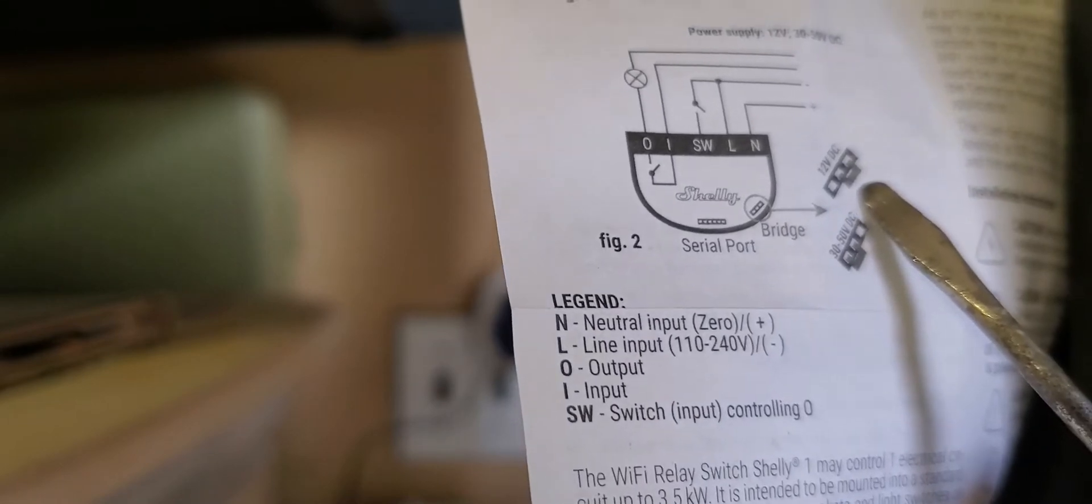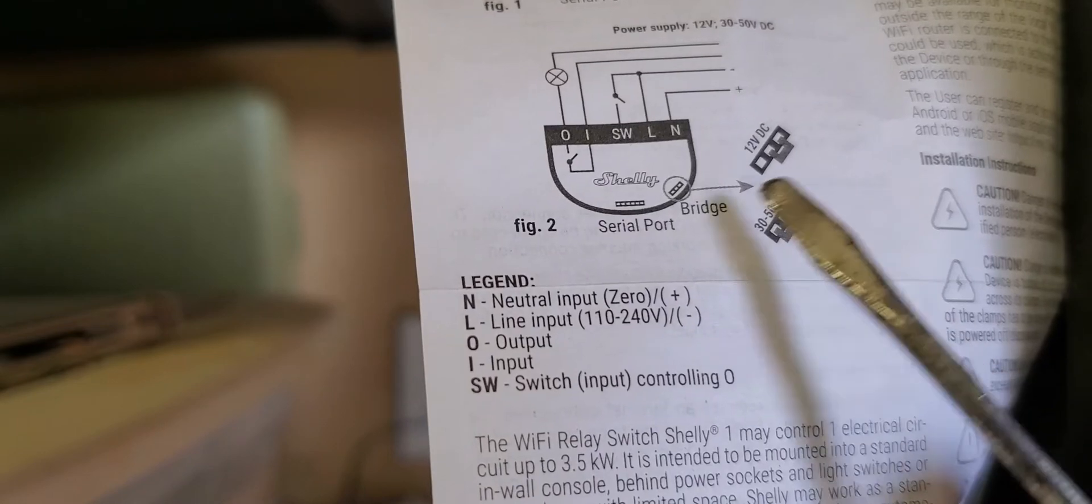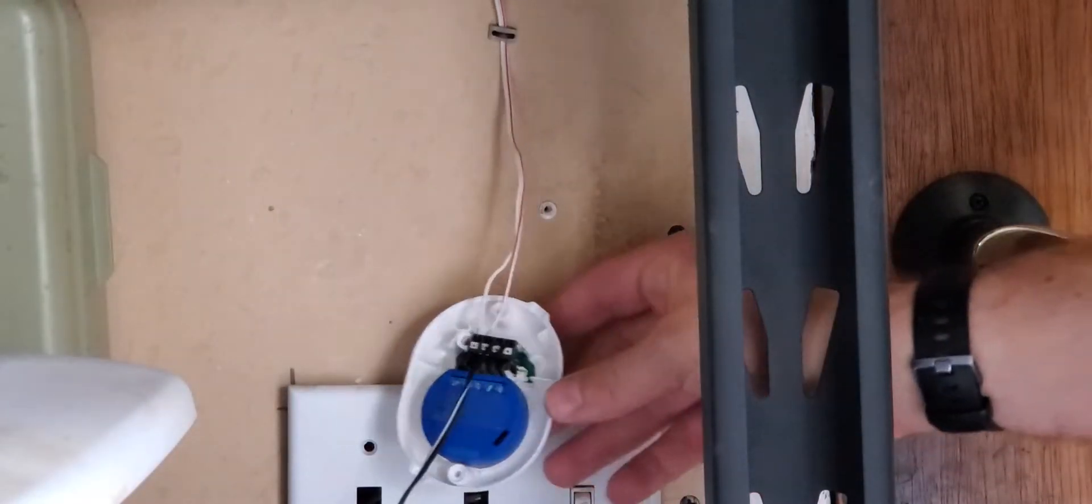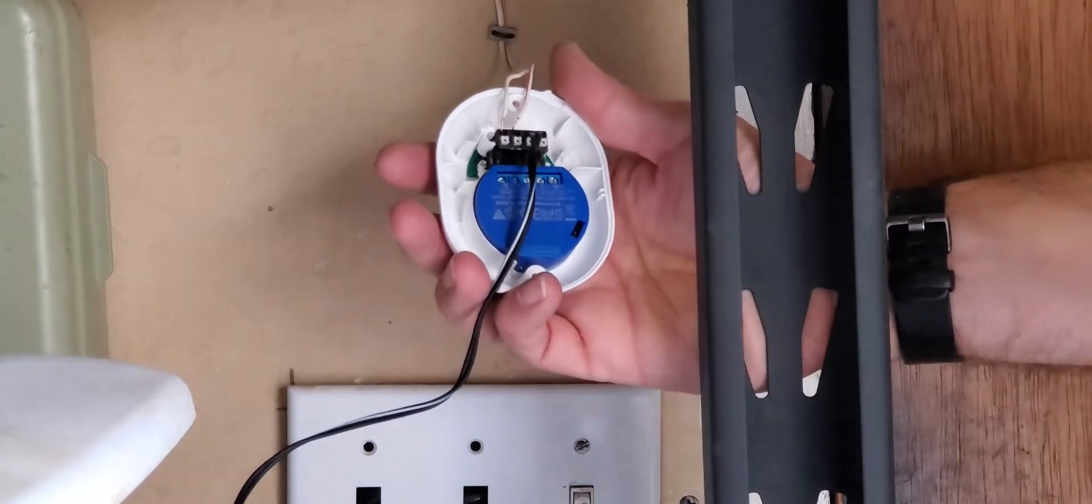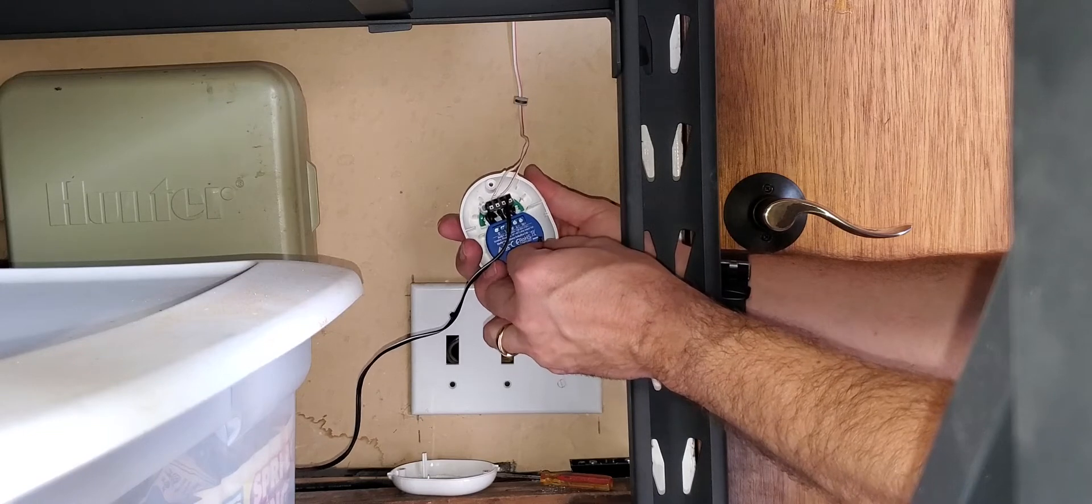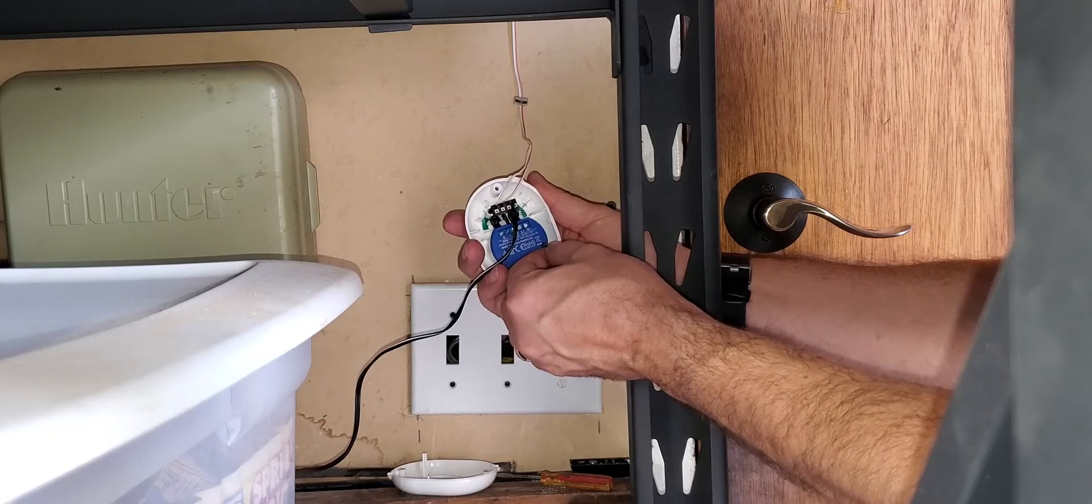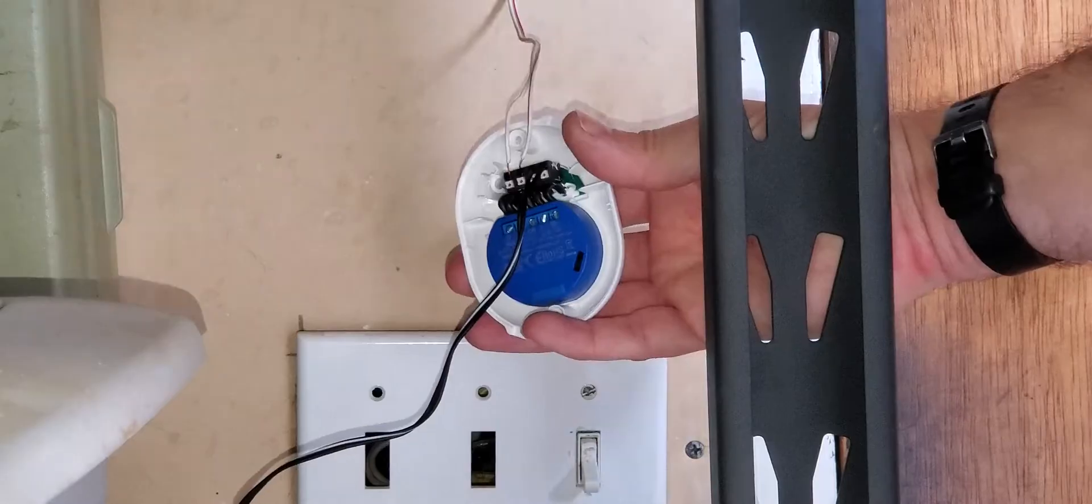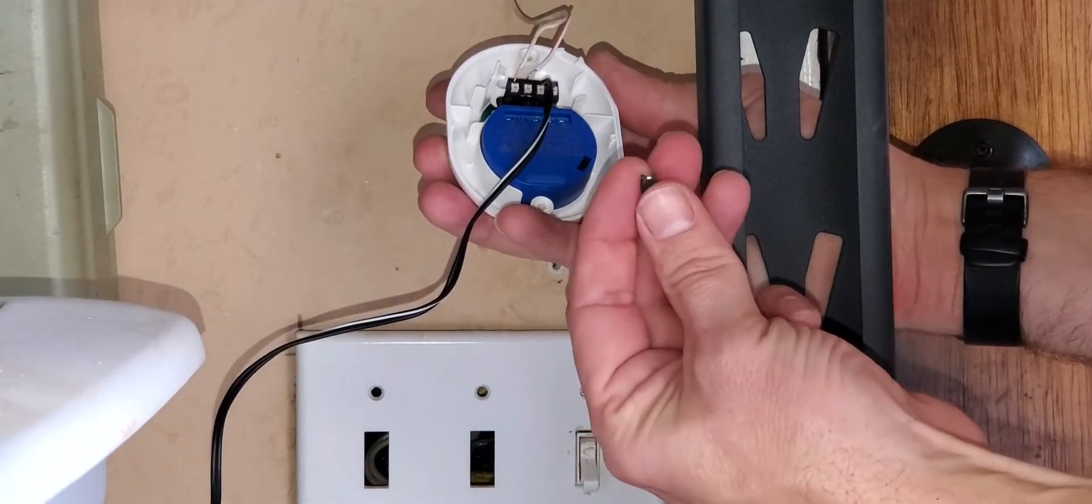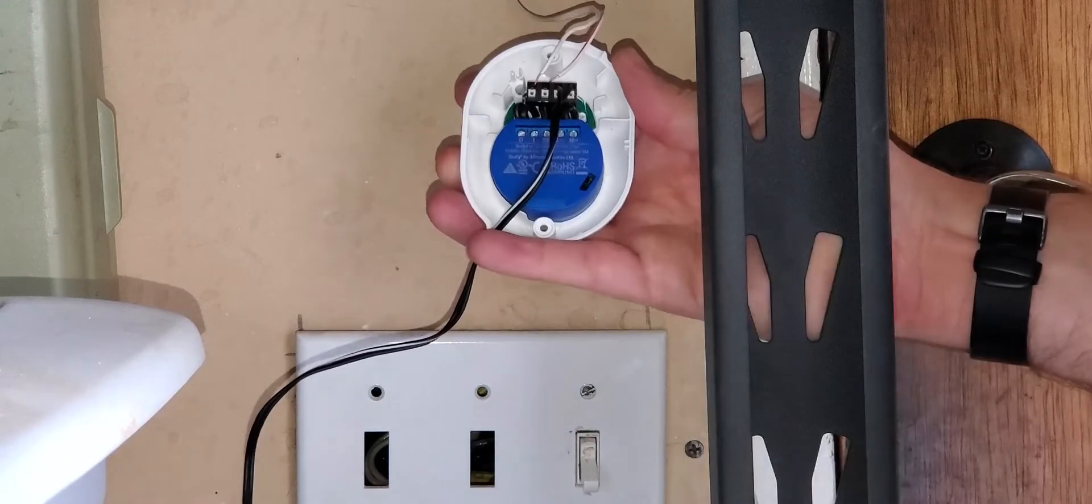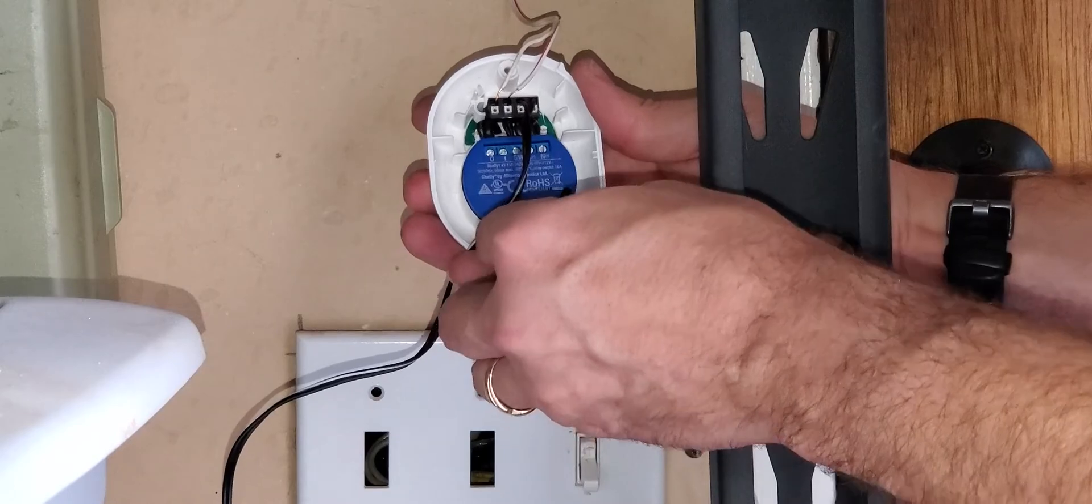Now we look at the instructions again and we see here that there is a setting where we can change it from the higher voltages in AC or DC to 12 volts DC and so we need to move that terminal. I just took a wire like a paper clip and used that to pull out the jumper and then I moved the jumper over to the other two pins on the Shelly one relay. This will make it respond to 12 volts instead of 30 plus volts.